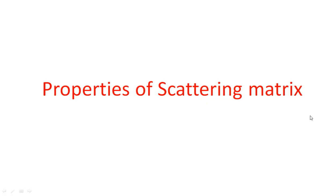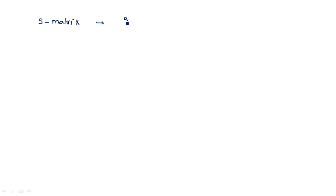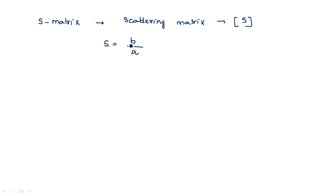In this video I am going to explain the properties of S matrix or scattering matrix. Before going to the properties, let us recall what the scattering matrix is and its purpose in microwave communication. S stands for scattering matrix, indicated by square brackets [S], where S is equal to B by A.